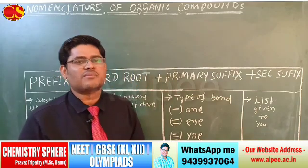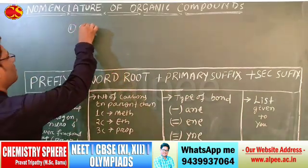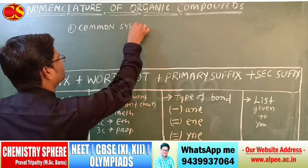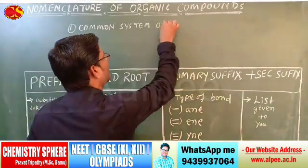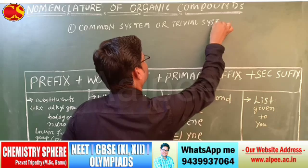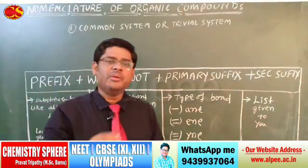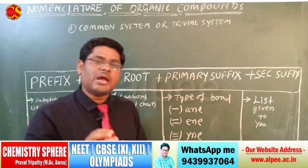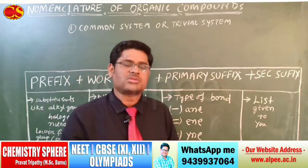There are many systems for the naming of organic compounds. The first is the common system, also called the trivial system. When only a limited number of organic compounds were known, this system was used — organic compounds were named on the basis of their source or origin.